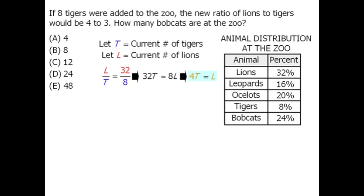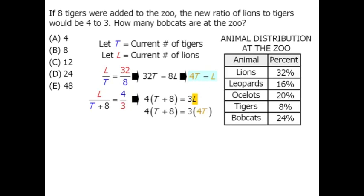Next, we're told that if we add tigers to the zoo, the ratio of lions to tigers would change. The number of lions remains the same, L, but the number of tigers increases from T to T plus 8. We're told this new ratio is equal to 4 to 3. Cross multiplying this new equation, we notice it contains an L, and from earlier we know L equals 4T, so we'll replace L with 4T.